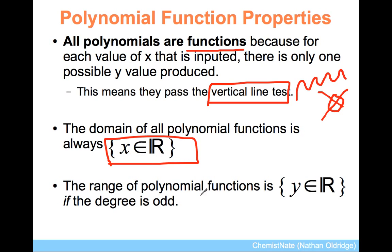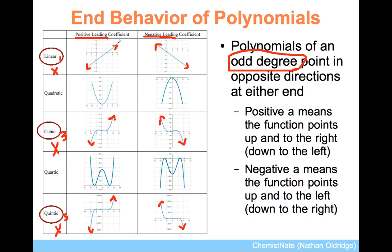Now, the range of polynomial functions is y element of R if the degree is odd. If I backtrack, I will show you that it goes all the way down to negative infinity to the left here, and all the way up to positive infinity here with no breaks. Same here. It goes down forever here, up forever here, up forever here, down forever here. These are the odd degree polynomials.